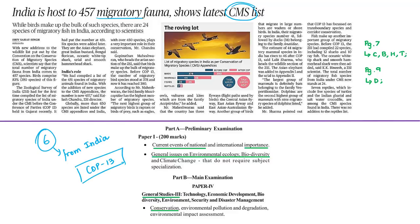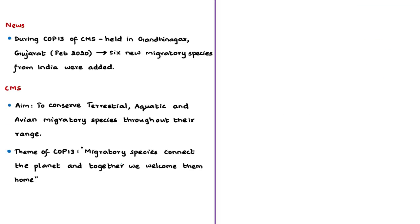The syllabus relevant to this discussion is given for reference. The CMS aims to conserve terrestrial, aquatic, and avian migratory species throughout their range. During the COP meeting, parties review and assess the conservation status of migratory species and the progress made towards conservation. In this 13th COP held in India, the theme was 'Migratory Species Connect the Planet and Together We Welcome Them Home,' and the Gandhinagar Declaration was adopted, calling for migratory species protection.